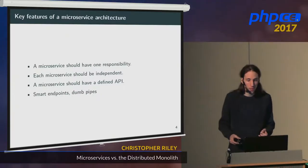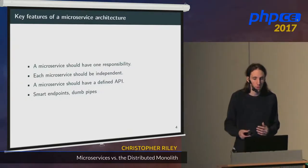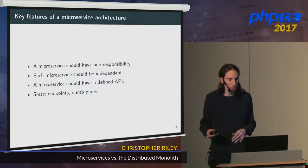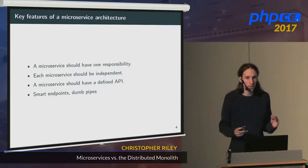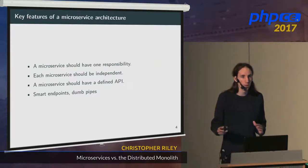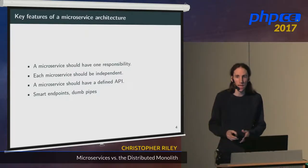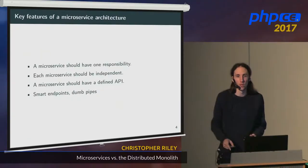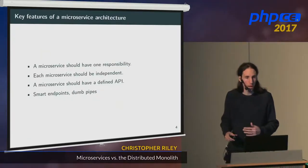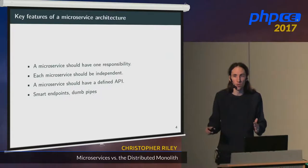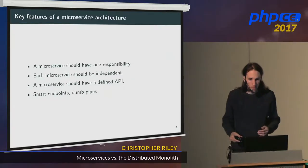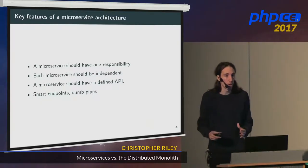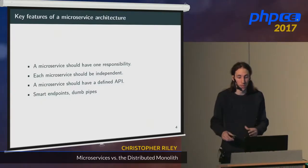Another thing which is a contrast to other forms of service-oriented architecture is that microservices have the concept of smart endpoints and dumb pipes. The connectivity between all your microservices should pretty much just handle getting a message to that microservice — you shouldn't have business logic embedded in your transfers between microservices. All your business logic should be built into the microservice itself.